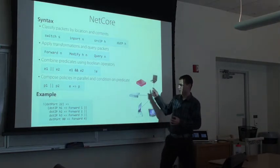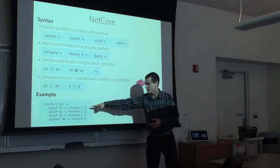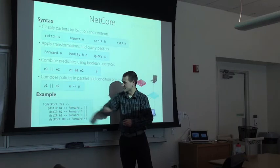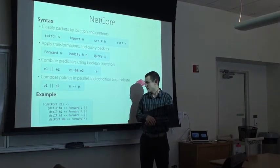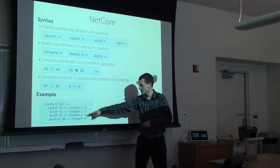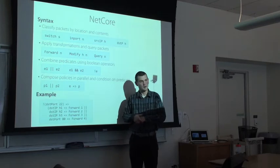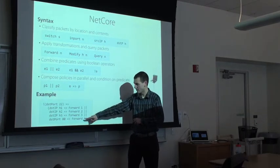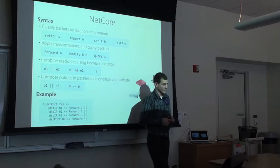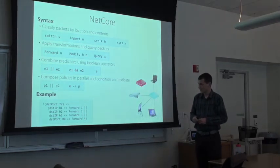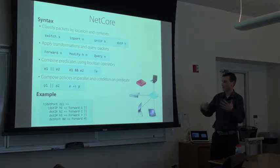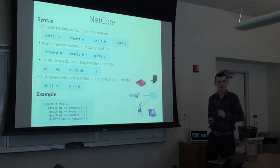Going back to our simple example, here's how you write it in NetCore. We basically just say: if the packet is not SSH, forward it between all the hosts using the destination IP to determine where to go, and also forward all web traffic to the middlebox. It couldn't be much simpler — just declaratively say what behaviors you want, union them together, and then restrict by your security policy.